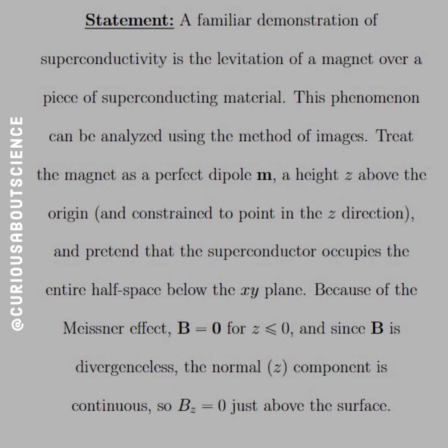Treat the magnet as a perfect dipole M, a height z above the origin, and constrained to point in the z direction. Pretend that the superconductor occupies the entire half space below the xy plane. Because of the Meissner effect, B equals 0 for z less than or equal to 0. And since B is divergenceless, the normal z component is continuous, so Bz equals 0 just above the surface.